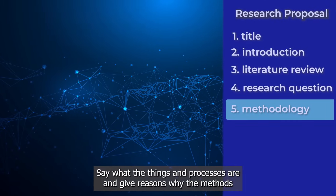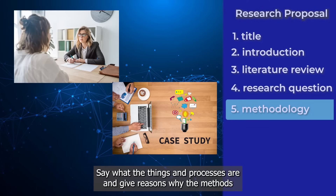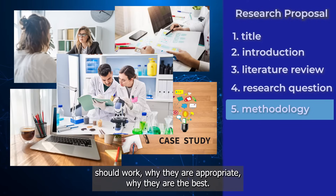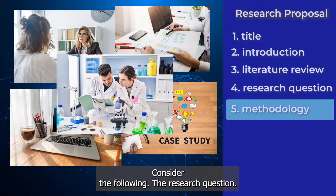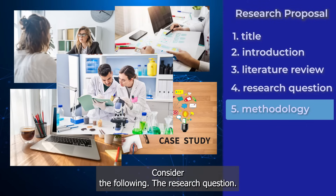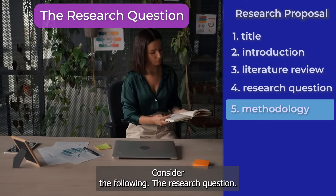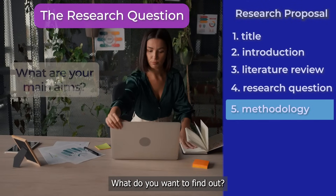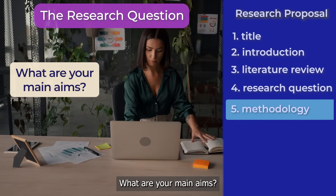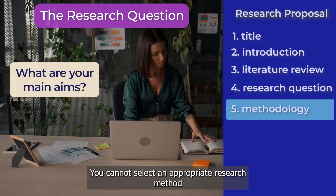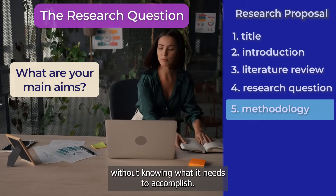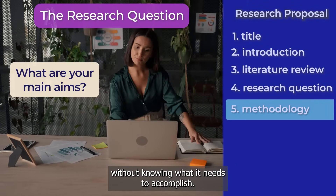Say what the things and processes are, and give reasons why the methods should work, why they are appropriate, why they are the best. Consider the research question: what do you want to find out? What are your main aims? You cannot select an appropriate research method without knowing what it needs to accomplish.